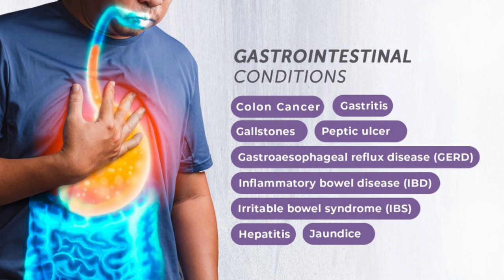For primary biliary cirrhosis, keep these key points in mind: middle-aged female, pruritus, jaundice, raised ALP, association with Sjögren's syndrome, and positive anti-mitochondrial antibodies.